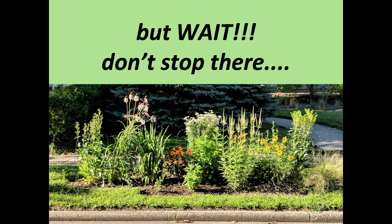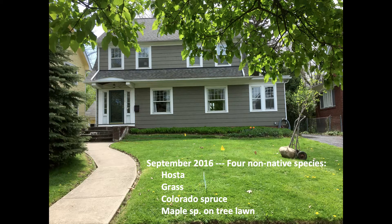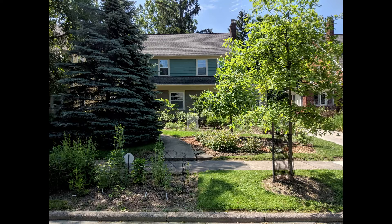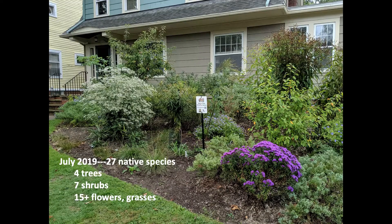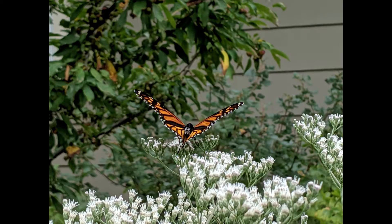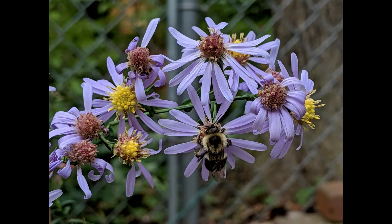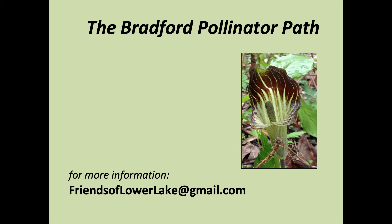The butterfly milkweed seed pods ripened and we're sharing seeds and dividing plants to expand our gardens. But why stop at the tree lawn? Here is our house in 2016 when we moved in — there were four non-native species in the front yard. Three years and lots of fun later, there are more than 27 native species. Start small. Start now. Dig up your grass and plant natives. Be part of the homegrown national park.